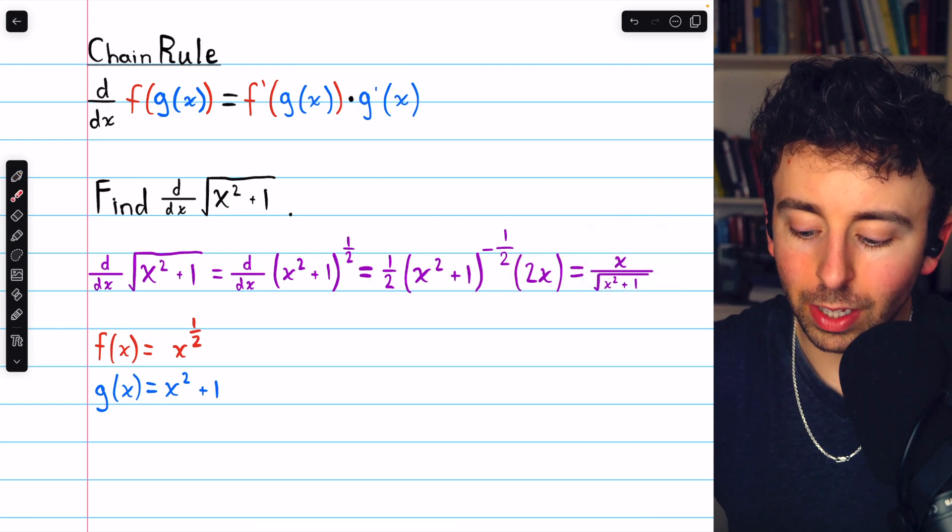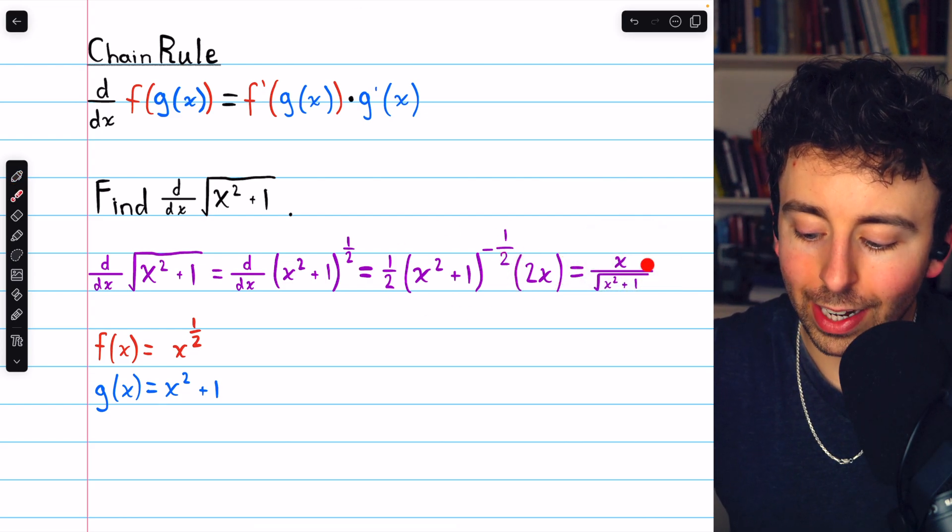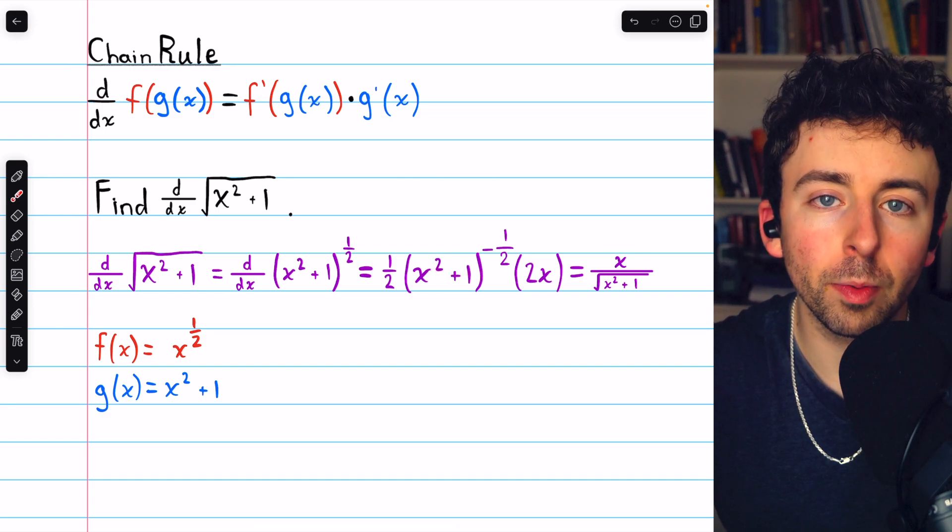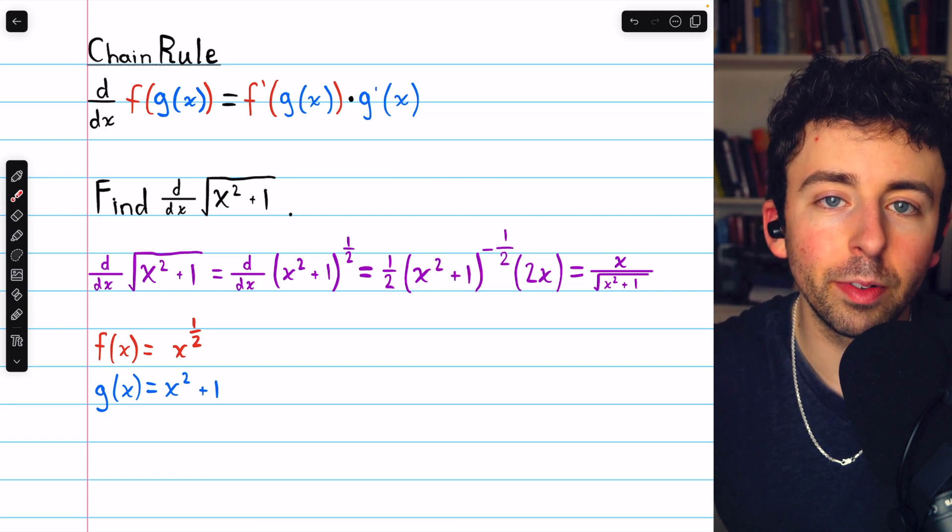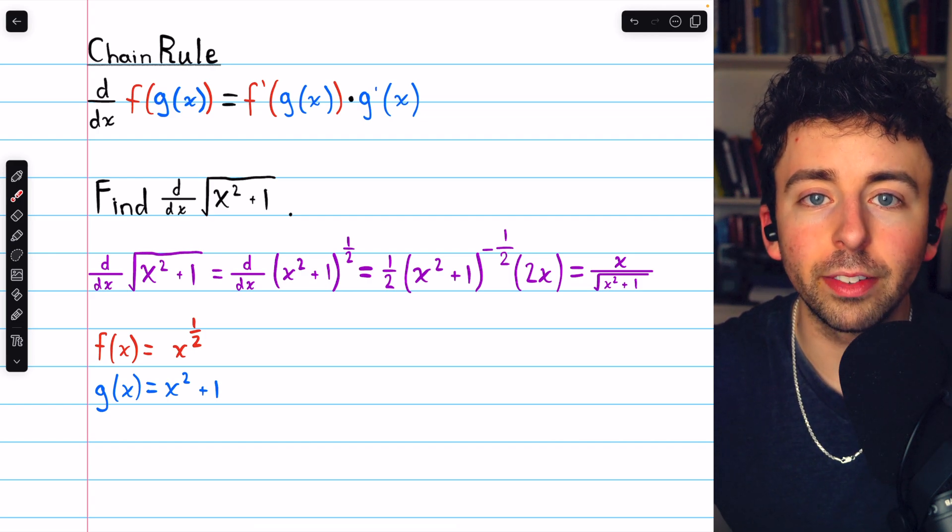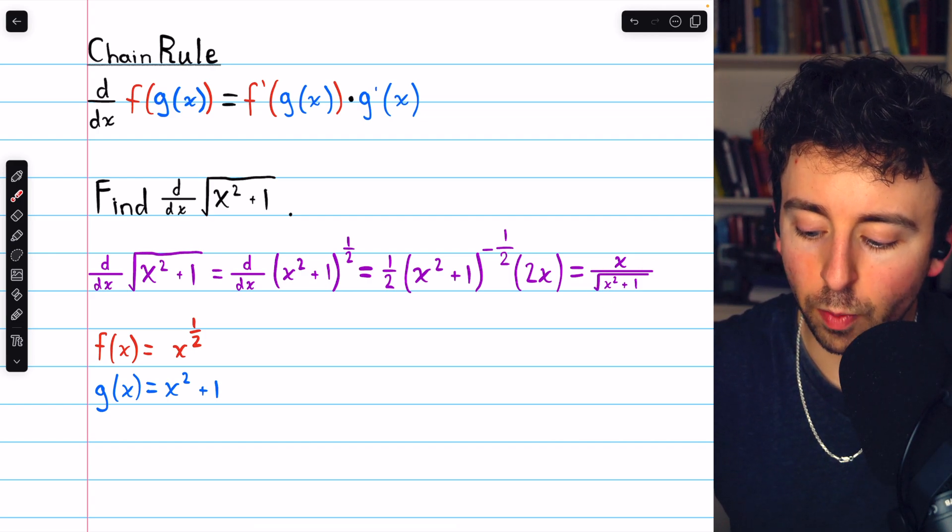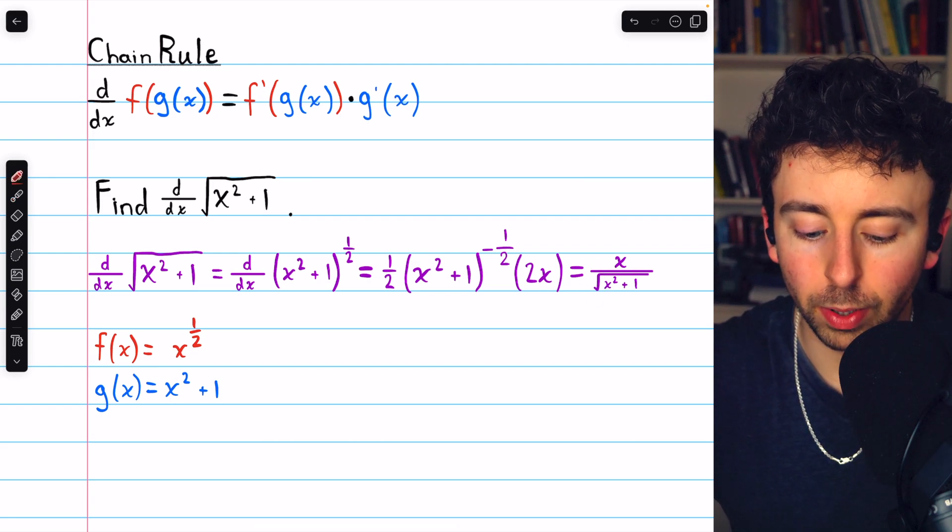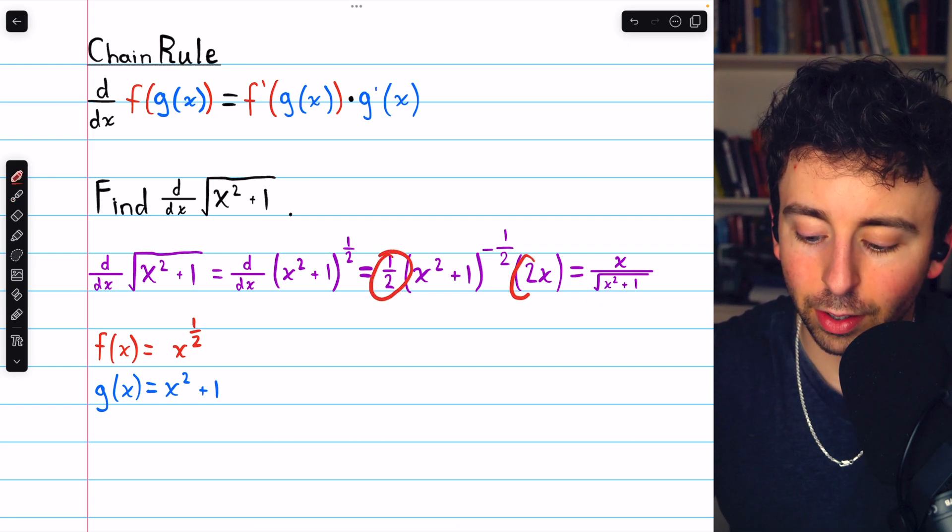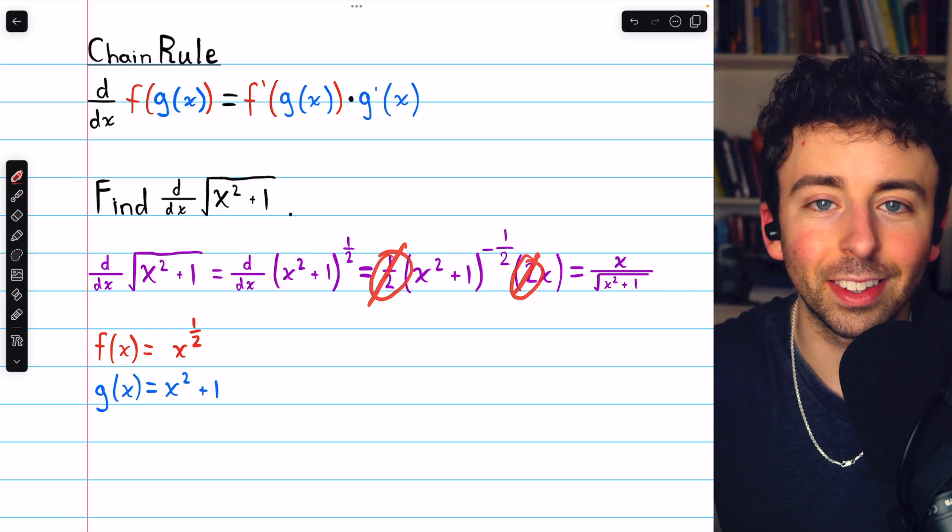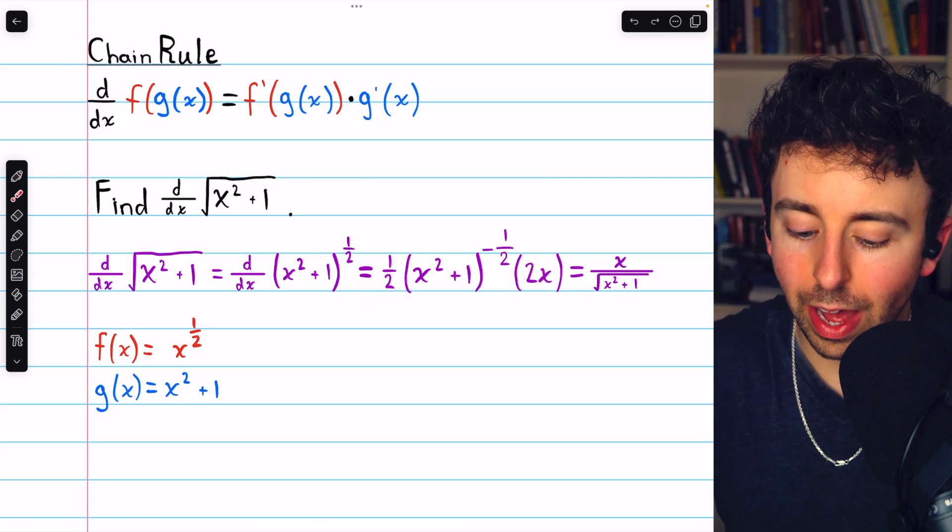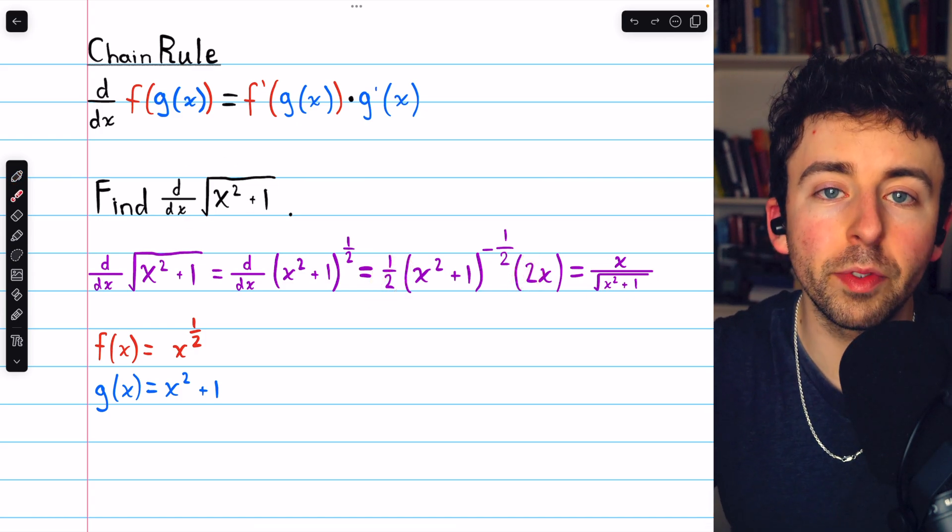So that's our derivative, and if you don't like negative exponents, we could rewrite it like this. Just move this expression to the denominator, then its power becomes positive. And, of course, a power of positive half is the same as a square root. So we could write it as x over the square root of x squared plus 1. This 1 half and this factor of 2, of course, canceled out. So x over the square root of x squared plus 1, that's the derivative.